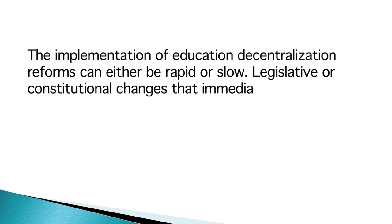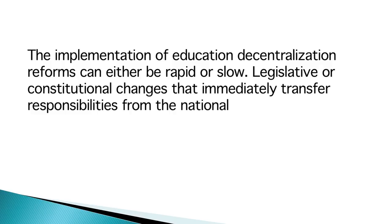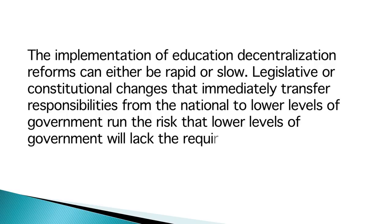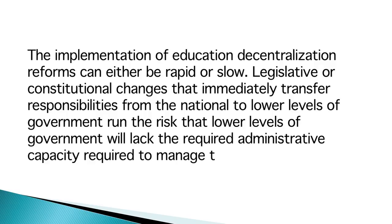The implementation of educational decentralization reforms can either be rapid or slow. Legislative or constitutional changes that immediately transfer responsibilities from national to lower levels of government run the risk that lower levels of government will lack the required administrative capacity to manage the system well. The result may be disruption in the delivery of schooling to children that adversely affects their learning, at least for a time. A more gradual decentralization can allow powers to be transferred to lower levels of government as those governments gain administrative capacity. The difficulty with gradual decentralization is that it may never occur at all, as the potential losers marshal their forces to fight the policy change.